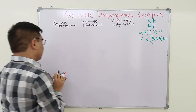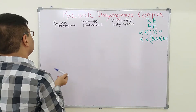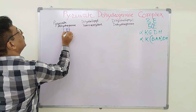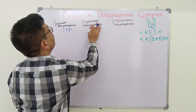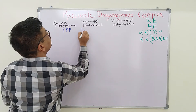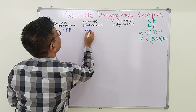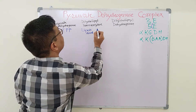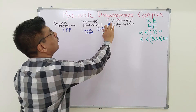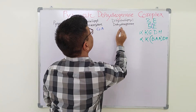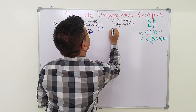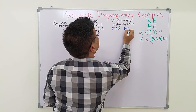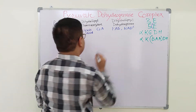The five co-enzymes required are: for pyruvate dehydrogenase, it is thiamine pyrophosphate (TPP); for dihydrolipoyl transacetylase, it is lipoic acid in the form of lipoamide and coenzyme A. In the case of dihydrolipoyl dehydrogenase, which is a flavoprotein, the co-enzymes required are FAD and NAD⁺.